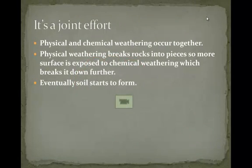Weathering is a joint effort — physical and chemical weathering occur together; they don't happen in isolation of each other. Physical weathering breaks rocks into pieces so that there's more surface area exposed to chemical weathering, which breaks it down even further into its mineral components or ions dissolved in water. Eventually, soil starts to form.